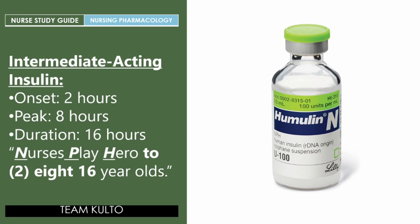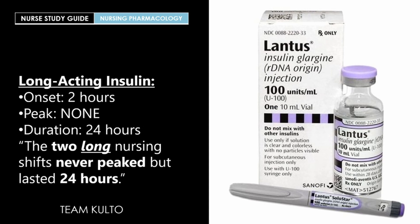Finally, long-acting insulin: onset is two hours, there is no peak, and duration is 24 hours — it stays in the patient's body all day. To remember this, use: 'The two long nursing shifts never peaked, but lasted 24 hours.' Two is your two-hour onset, 'long' is long-acting insulin, 'never peaked' means no peak, and 24 hours is the duration.